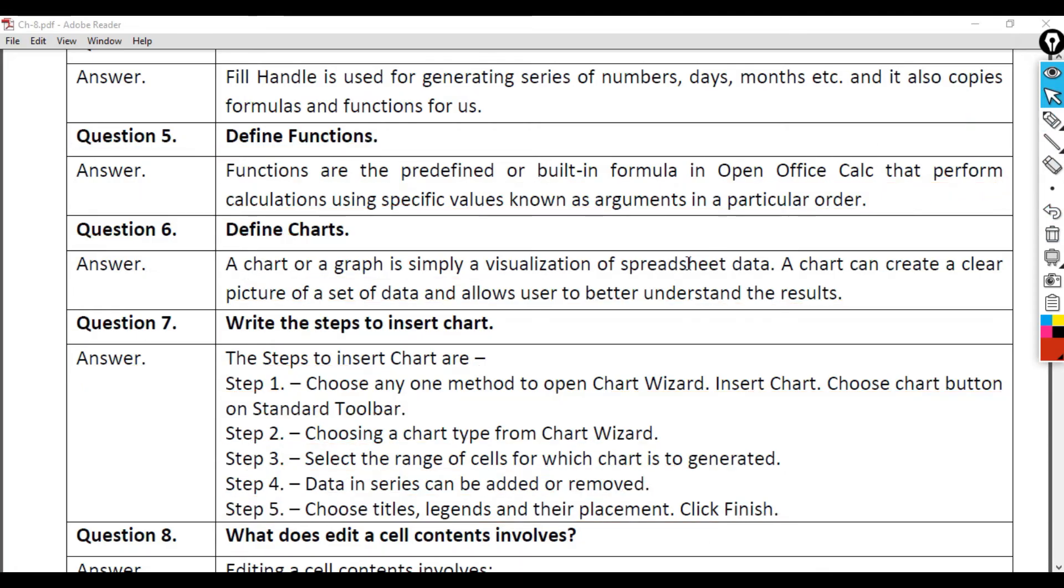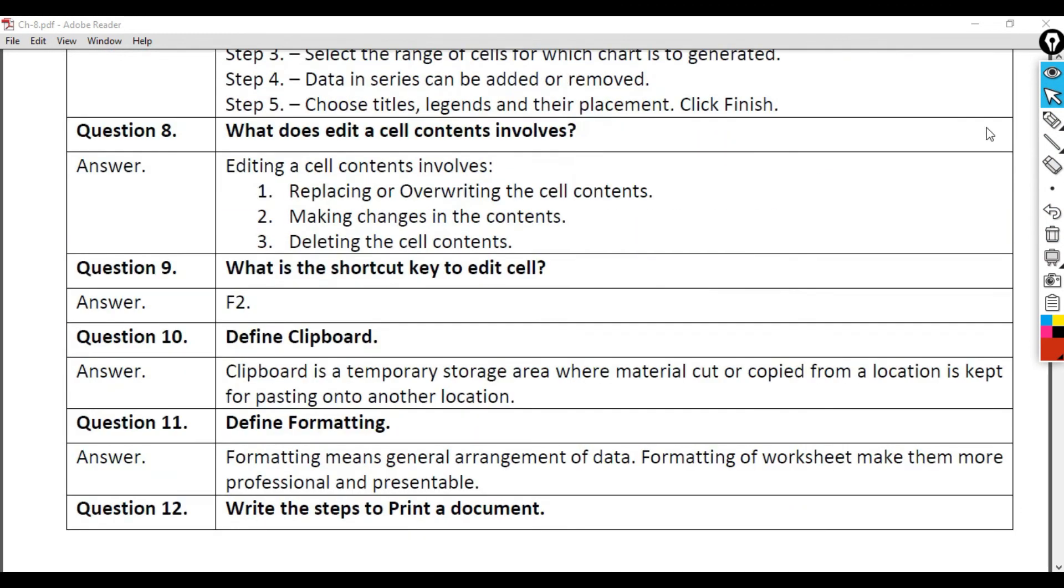Question 8: What does edit a cell contents involve? Answer: Editing a cell contents involves: 1) Replacing or overwriting the cell contents; 2) Making changes in the contents; 3) Deleting the cell contents.